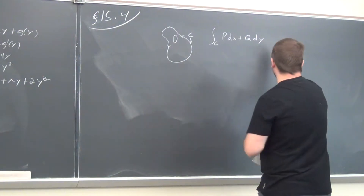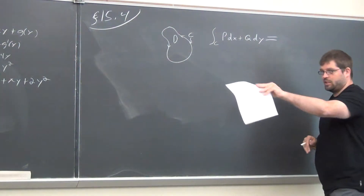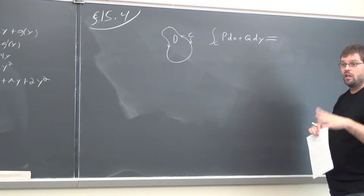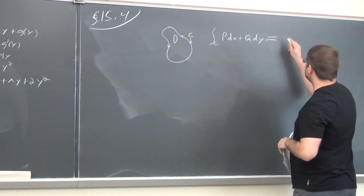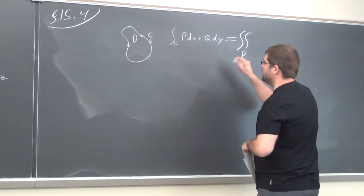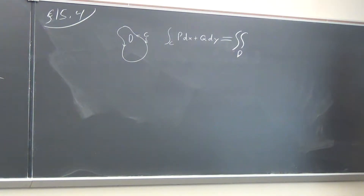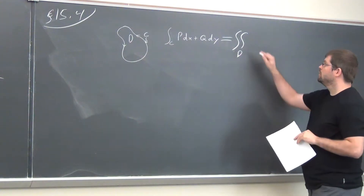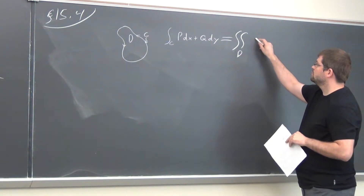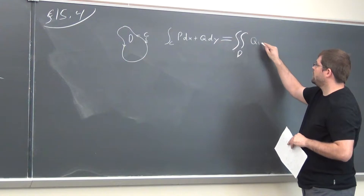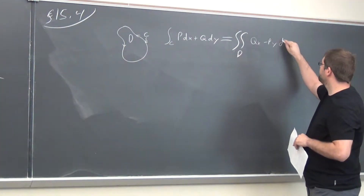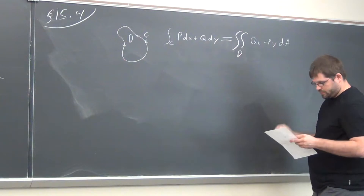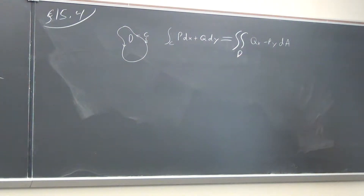The theorem says — there are some conditions I won't worry about — that this line integral is equal to the double integral over the region bounded by that closed curve. It's Q sub x minus P sub y. Alright, so let's try another example, one simple one, just a bit more involved than last time.